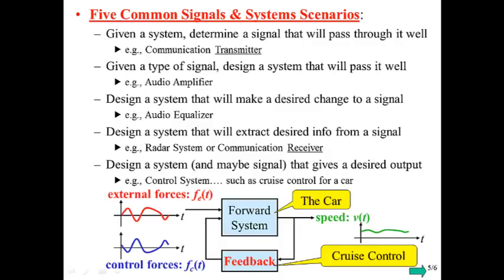Now we might also be designing a system and some signal that gives a desired output. So like cruise control on a car, we've got the system here. We call it the forward system, which is the car. And then there's certain external forces that would be what's happening on the road, wind, and so forth.